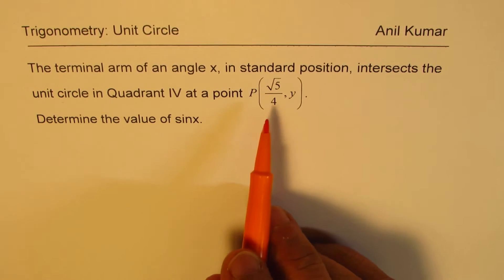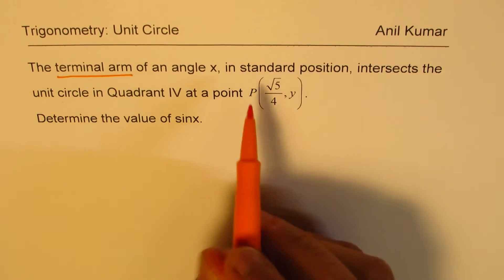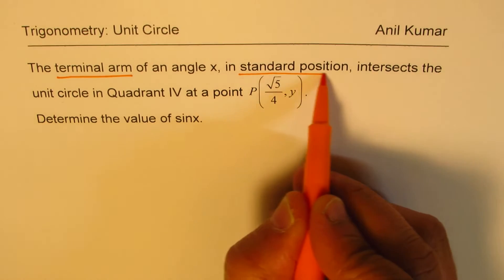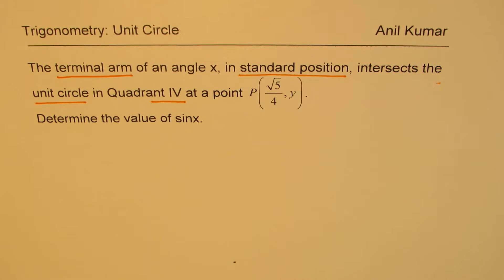Now this statement has a lot of keywords: terminal arm, standard position, intersects a unit circle in quadrant 4. So we'll look into all these while answering the question.